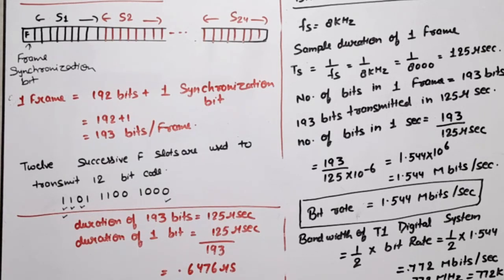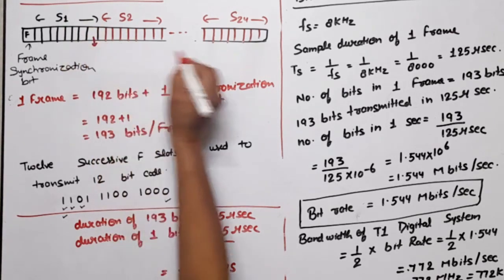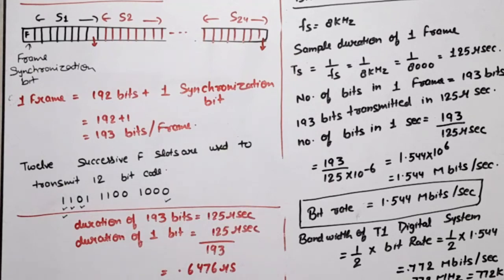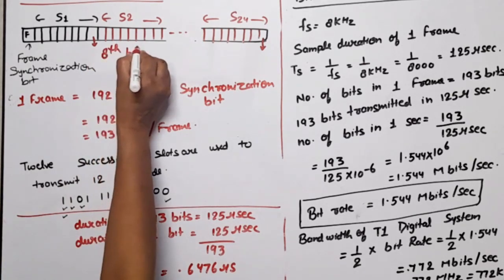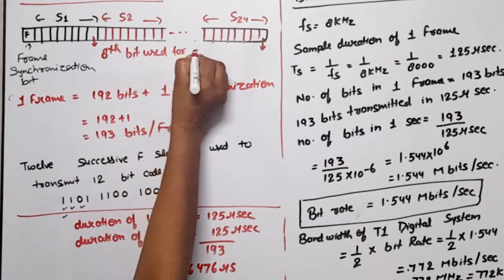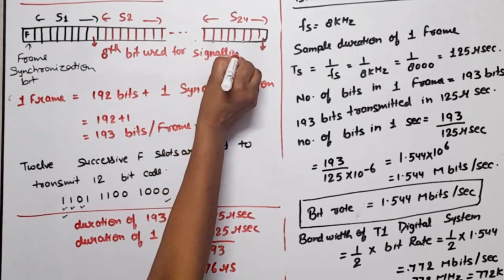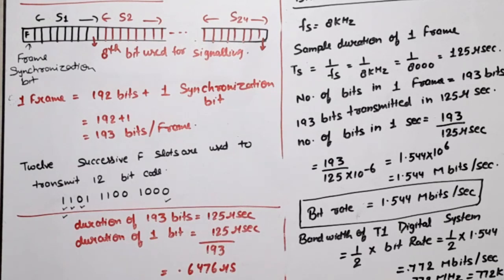To transmit signaling signal along with voice signal, we use a sharing scheme. In this case, every signal sample was contained in 8 bits. The 8th bit, which is the LSB, is used for signaling. For example, if we talk about this bit, this 8th bit is used for signaling. This means that when our information is transmitted, our voice will transmit along with the signaling information. So this is all about the PCM-TDM system.